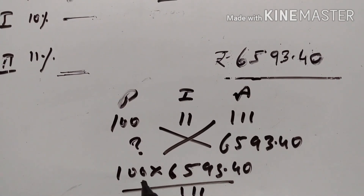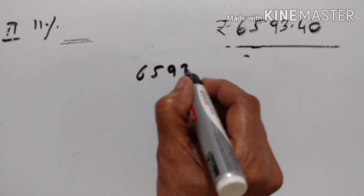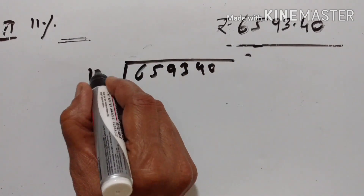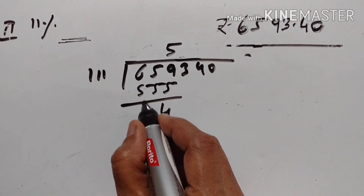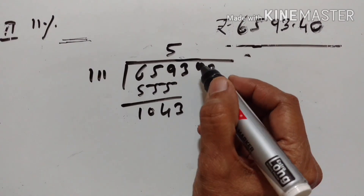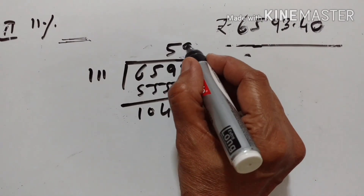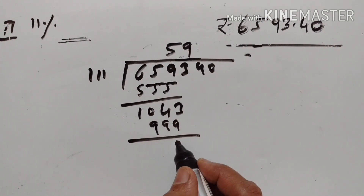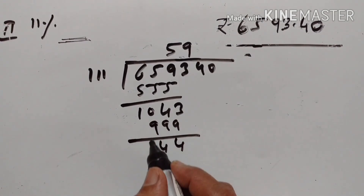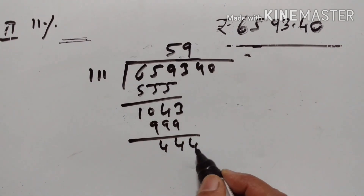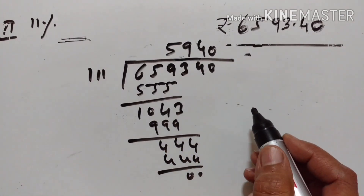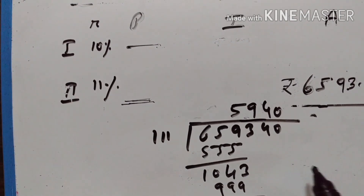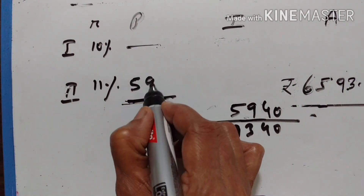When we multiply this by 100, we get 659340 divided by 111. Working through the division: 555, then 9, giving 999, then 4, then 0. So the principal of the second year is equal to Rs. 5940.